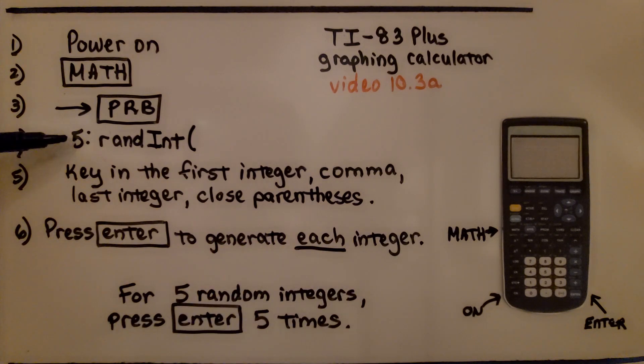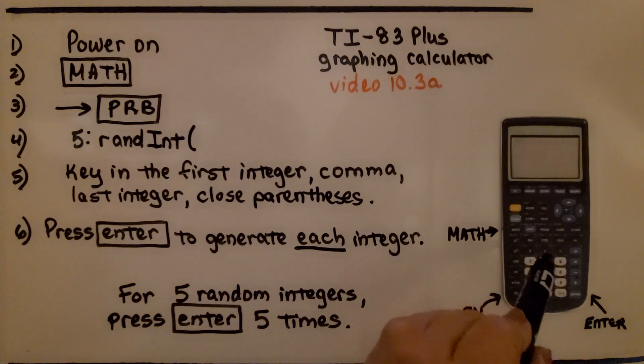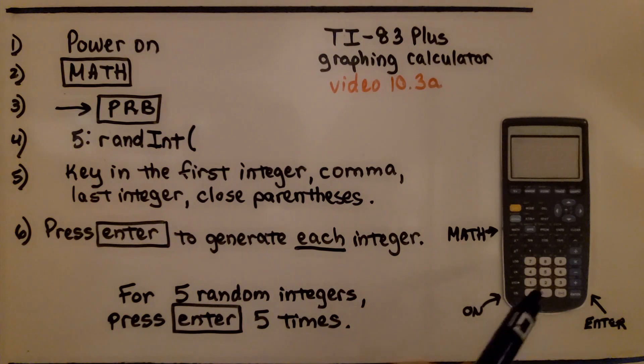We go to that fifth option. Now, we key in the first integer, a comma. The comma is right there. We put the last integer, and then we hit close parentheses. Then we press enter to generate each integer. So for 5 random integers, we're going to press enter 5 times.